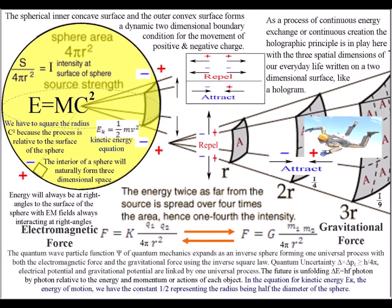In physics, there are two long-range forces, the electromagnetic force and the gravitational force. They both share the same geometry in the form of the inverse square law.